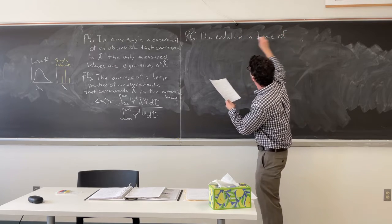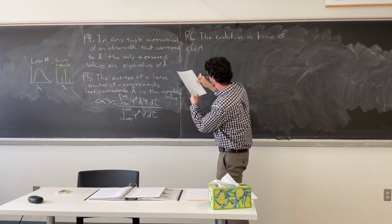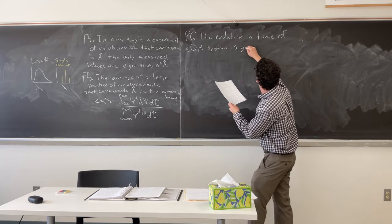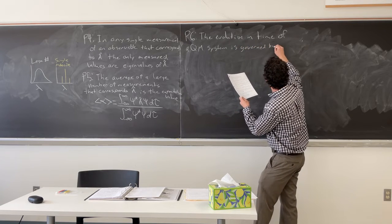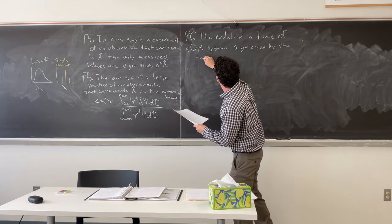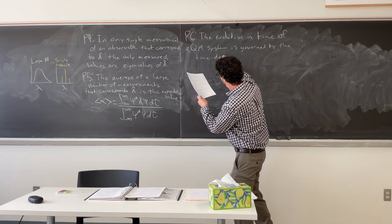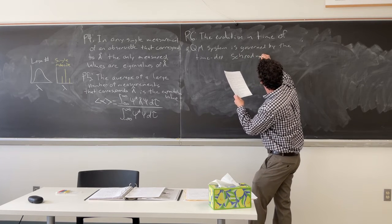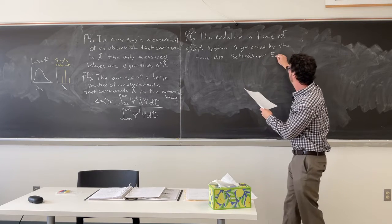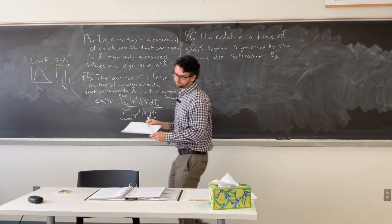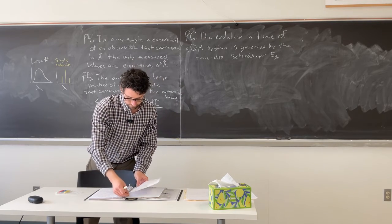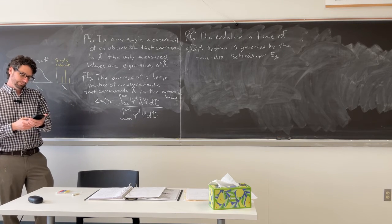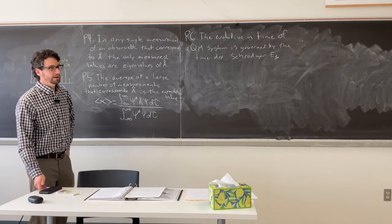If we look at the evolution of time, the evolution of time is governed by the time-dependent Schrodinger equation. Most of the time, we're going to assume that we don't have to worry about time. But it does make a big deal in some cases.